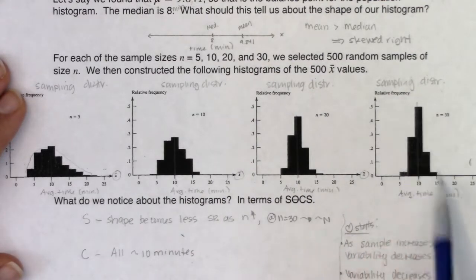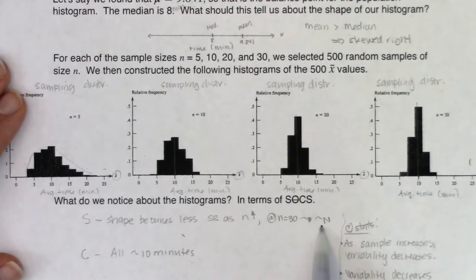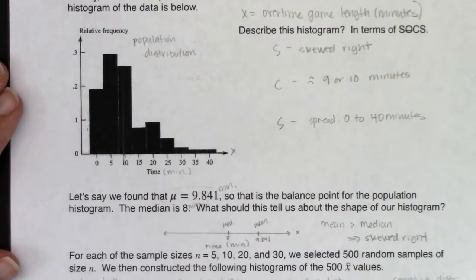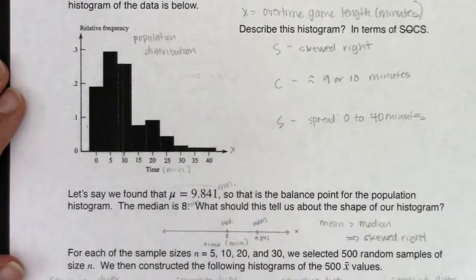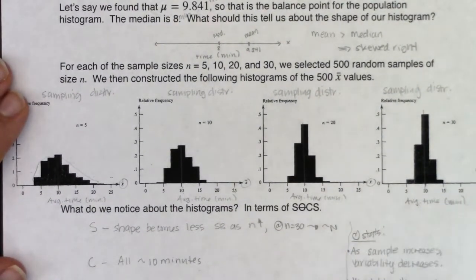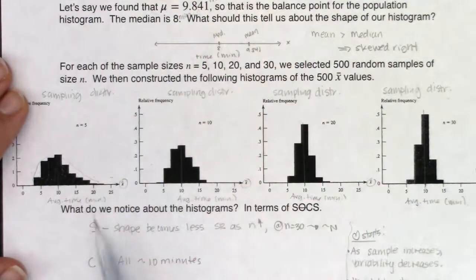By the time we got to n equals 30, it actually looked approximately normal — and I'll give you a rule for when you can officially call it approximately normal on the next page. In terms of the centers: the average population game took about 9 or 10 minutes, and all of our sampling distributions also showed centers around 9 to 10 minutes. So whatever the population center was, it showed up in the sampling distribution.